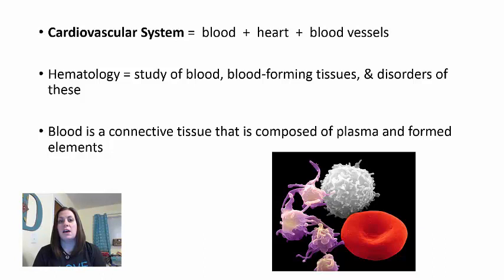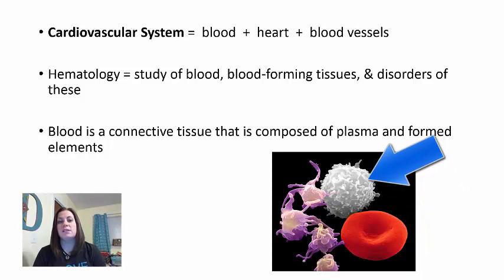If you'll recall from chapter 4, blood is a connective tissue. This connective tissue is composed of plasma—it is the only connective tissue that has a liquid matrix, which is the plasma—and formed elements. The formed elements include the red blood cells, white blood cells, and platelets.